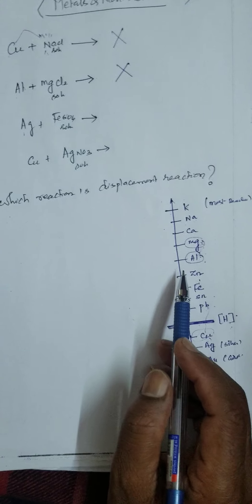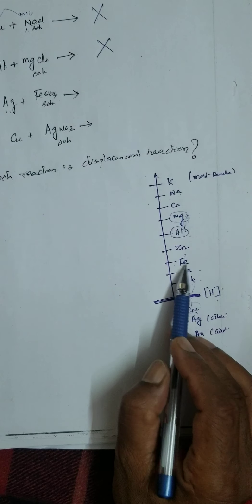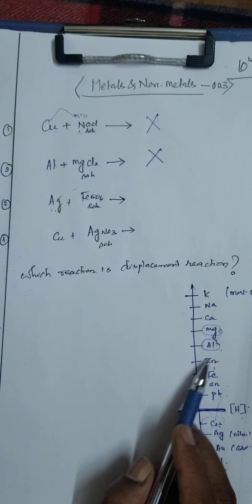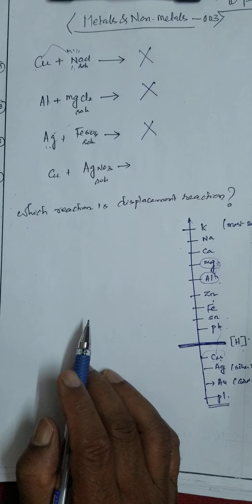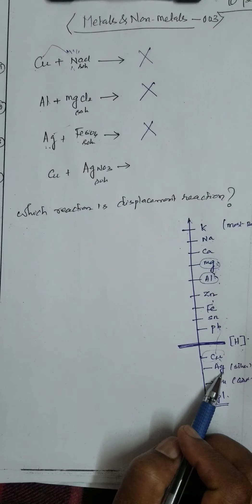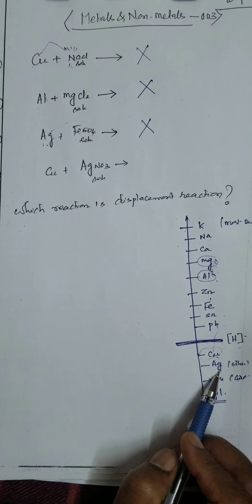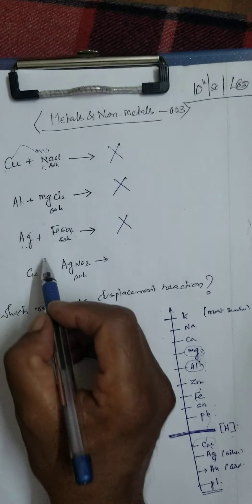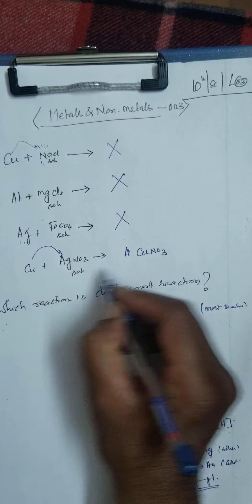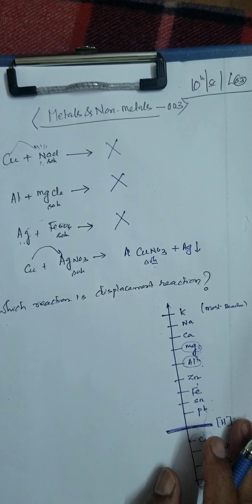Silver (Ag) and ferrous sulphate (FeSO4): Ag is below iron in the activity series, so Ag cannot displace iron. Therefore that reaction is not possible. Now, copper and silver nitrate: copper is above silver, so copper can displace silver. The products would be copper nitrate plus silver precipitate. This is the displacement reaction.